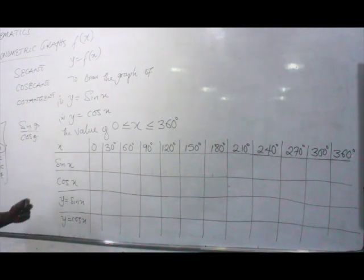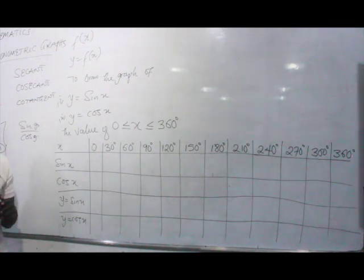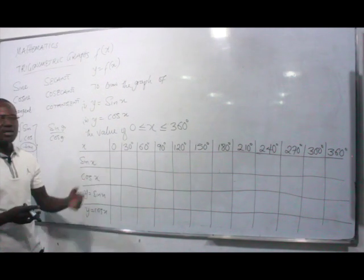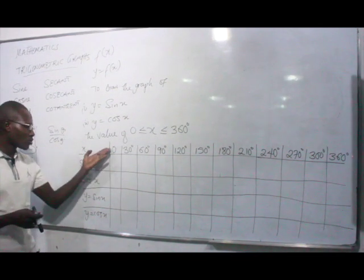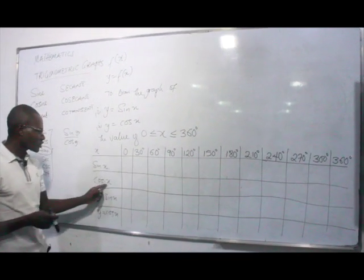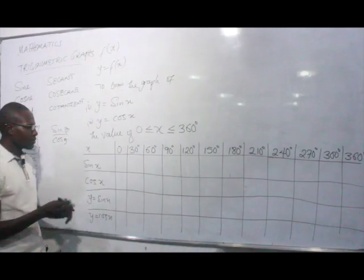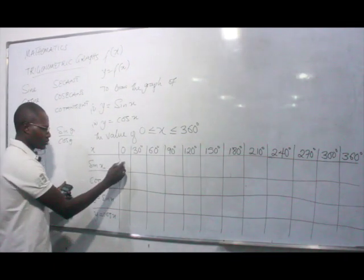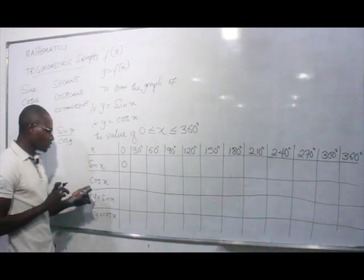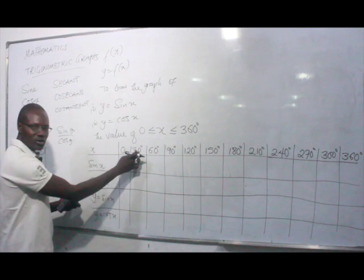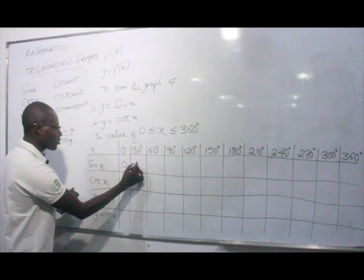The students are expected to have their calculators because these are angles, and you can't just memorize everything without a calculator. When x is 0, sin 0 is 0. When x is 30, sin 30 is 1 over 2, which is 0.5.